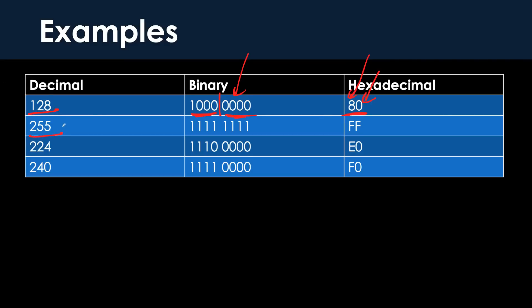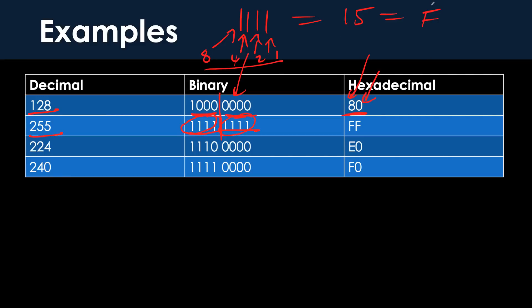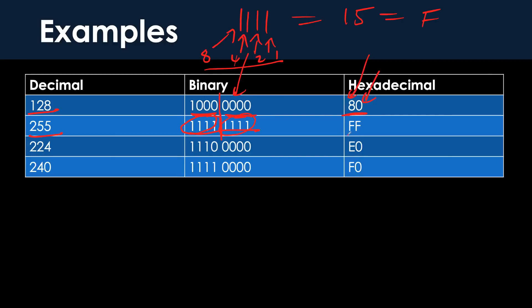What about 255? 255 looks like this in binary — it's eight binary ones. If we split that in half, each group of four ones equals 15 in decimal, because one plus two plus four plus eight is 15. 15 in decimal equals F in hexadecimal. So the easiest way to work this out is to take a decimal number, put it into binary, break it into groupings of four bits, convert those four bits into a decimal number, and that gives you your hexadecimal number. So 255 equals FF.